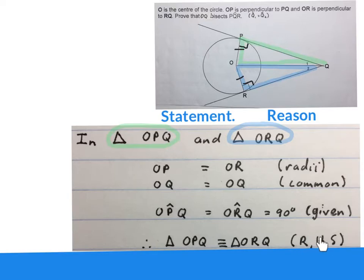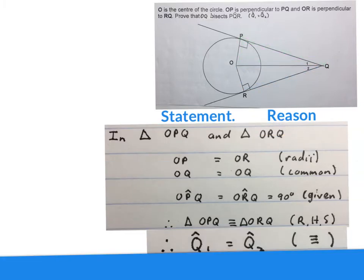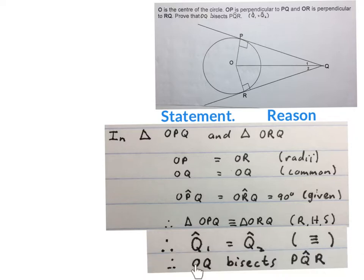The reason is RHS — right angle, hypotenuse, side. There's the 90 degrees, then the hypotenuse and the side. Then we can write angle Q1 is equal to angle Q2 because of congruency. The question asks us to prove that OQ bisects angle PQR, so we write OQ bisects angle PQR. Please stop the video and get your brain around this rider.